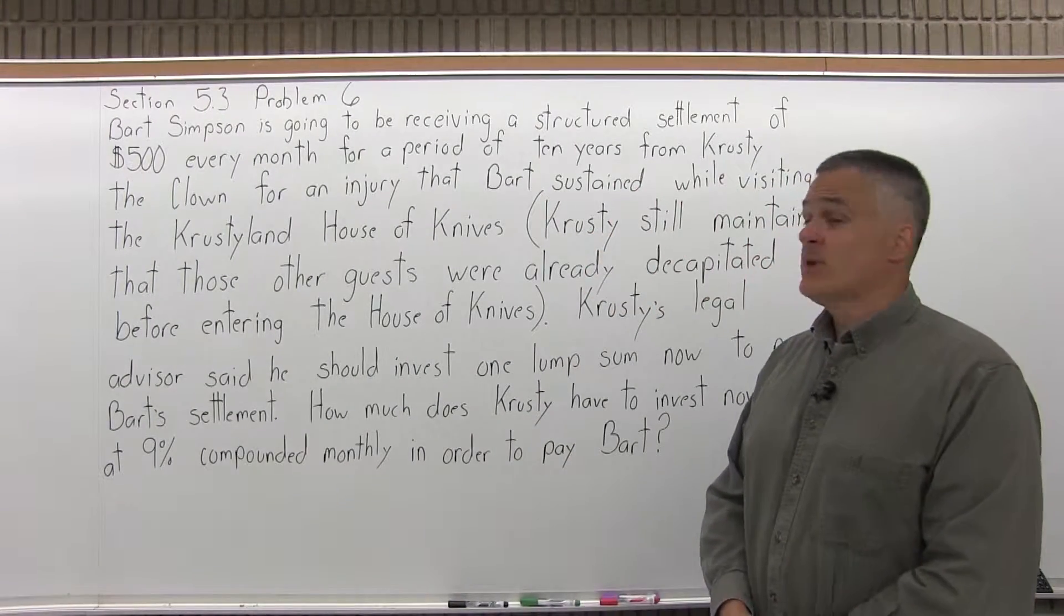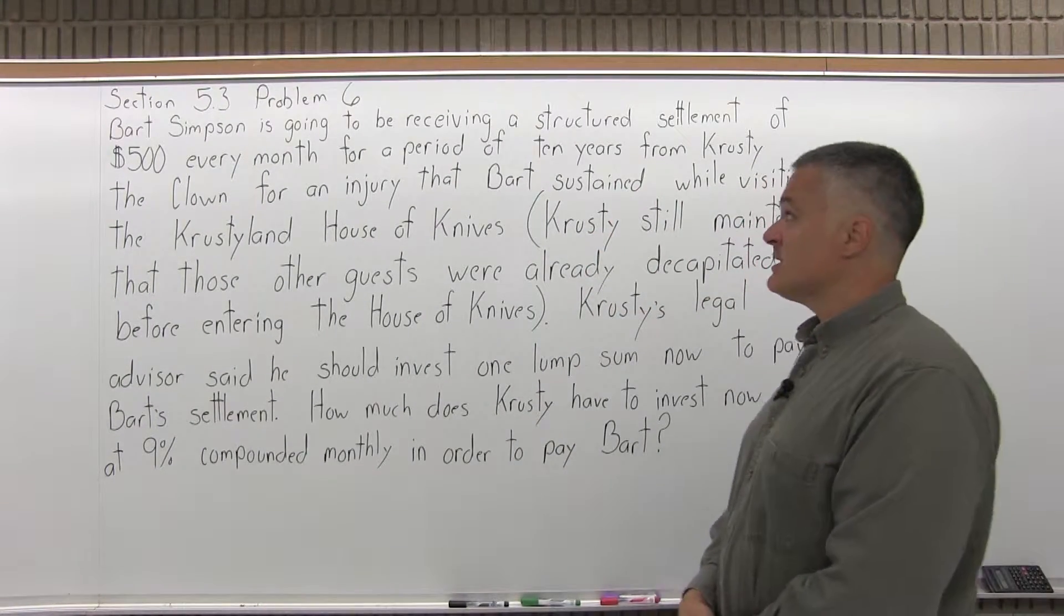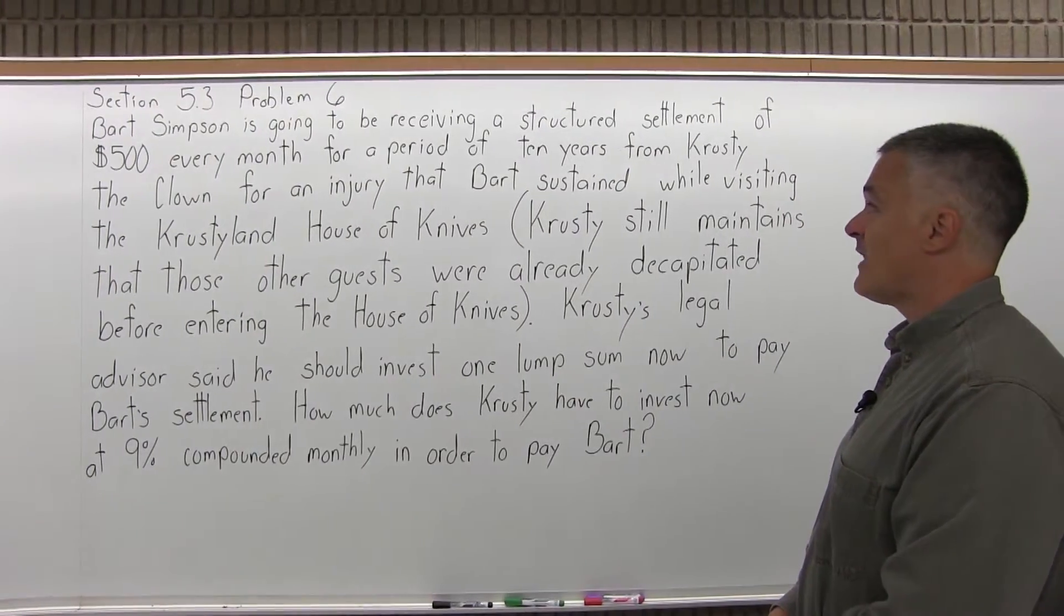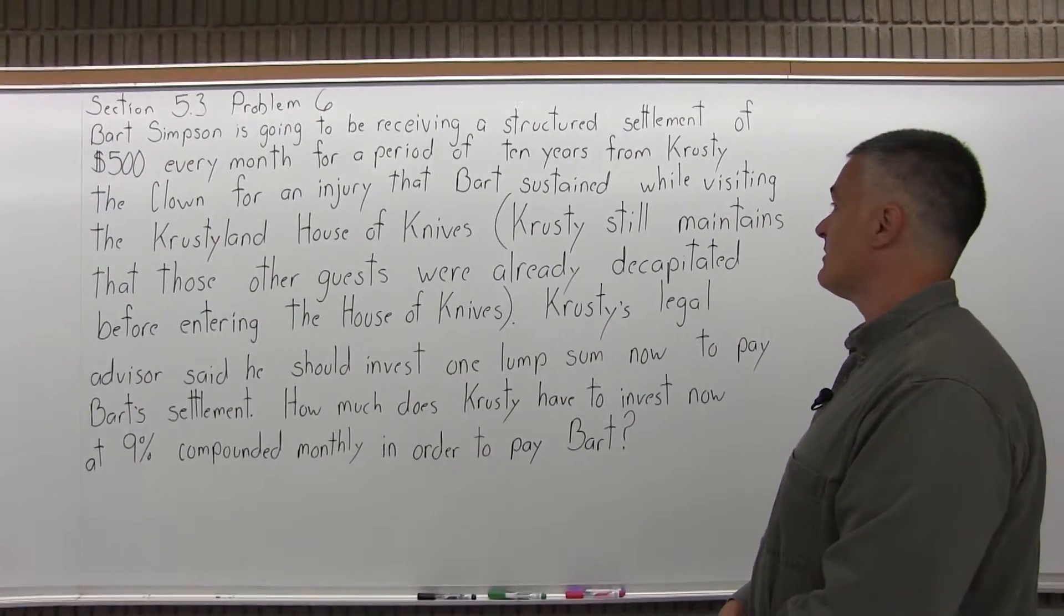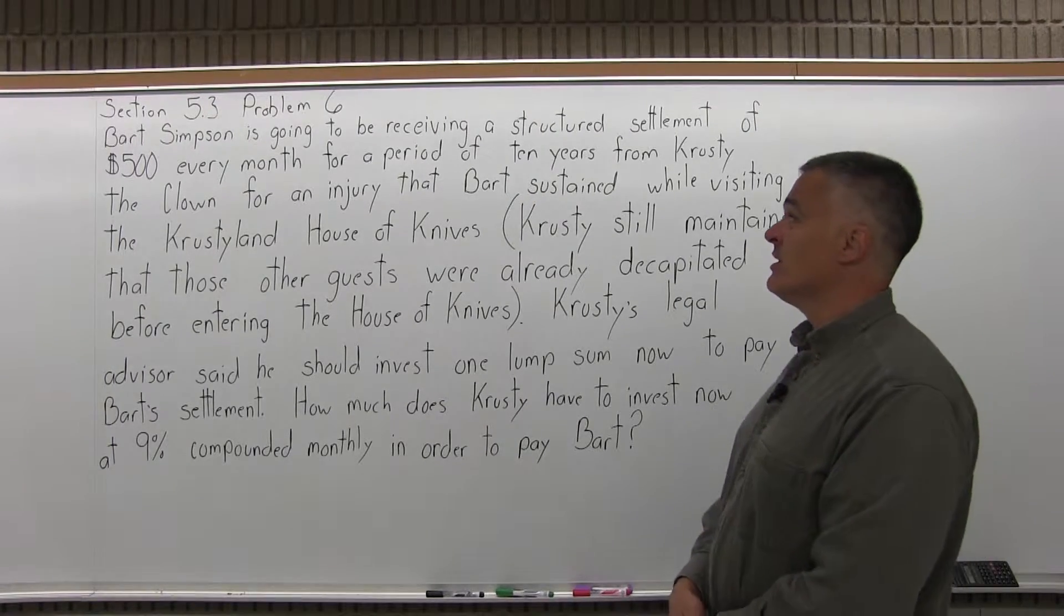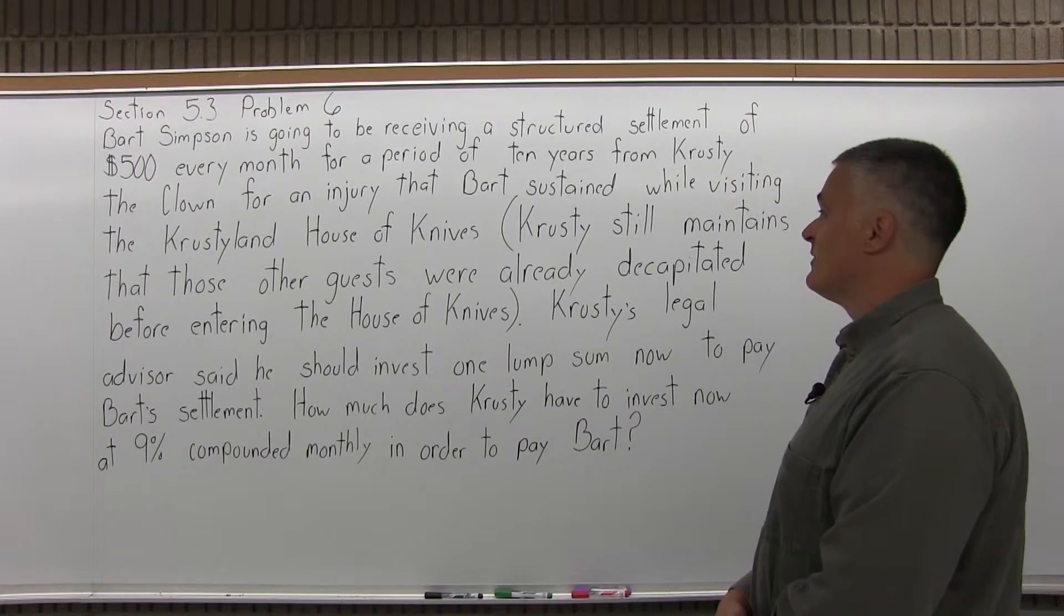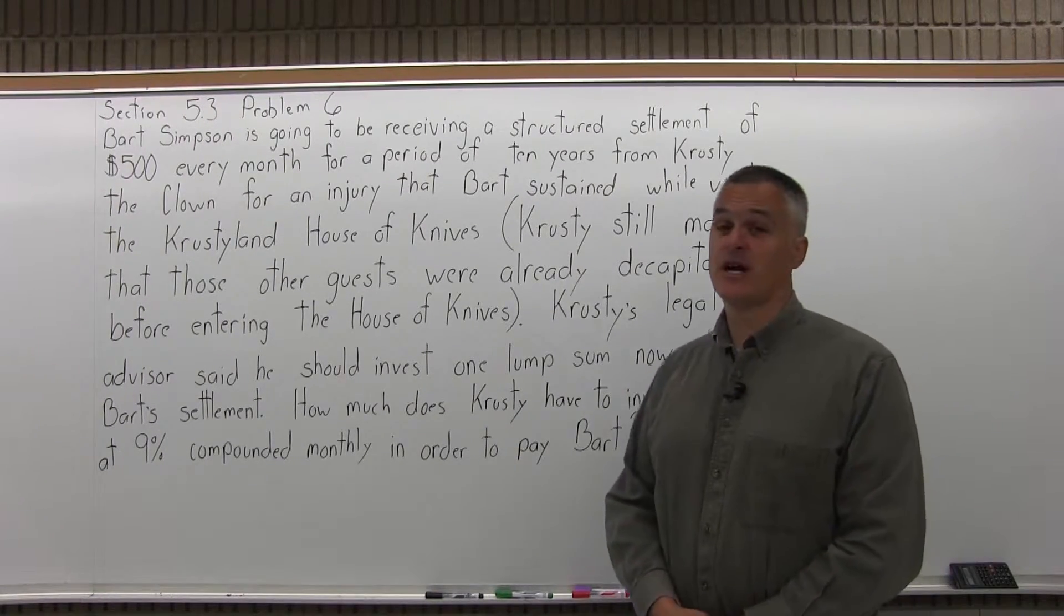This is Section 5.3, Problem 6. It says, Bart Simpson is going to be receiving a structured settlement of $500 every month for a period of 10 years from Krusty the Clown for an injury that Bart sustained while visiting the Krustyland House of Knives.